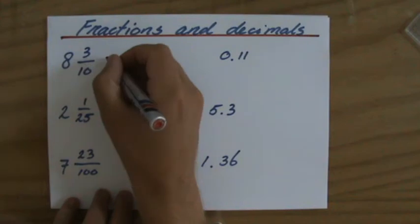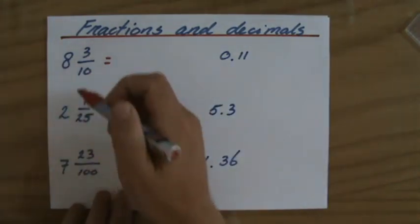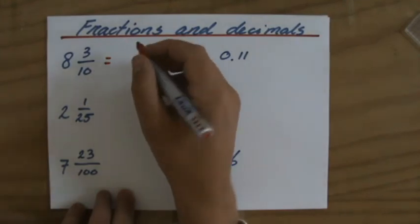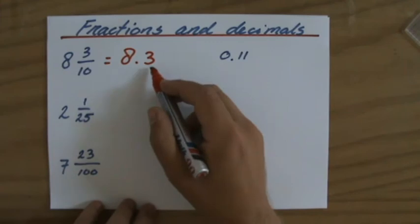Alright, I'm going to do it relatively quickly. Decimals are always tens, hundreds, thousands. So 8 and then 3 over 10, that will be 8.3. Three tenths.